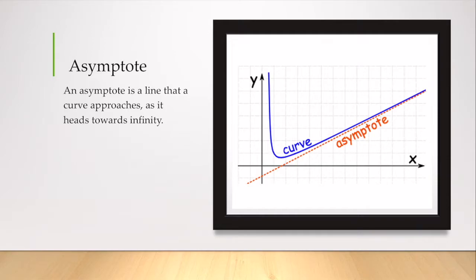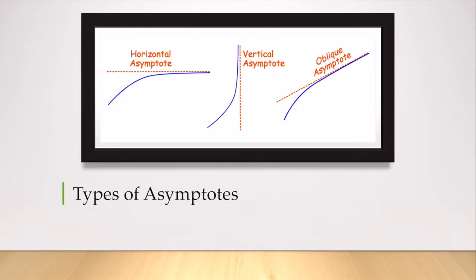There are different types of asymptotes: horizontal asymptotes, vertical asymptotes, and oblique asymptotes. I'm going to teach you how to find all three and where they come from.